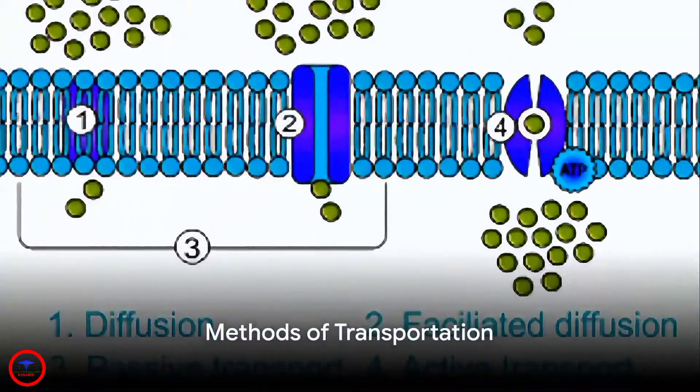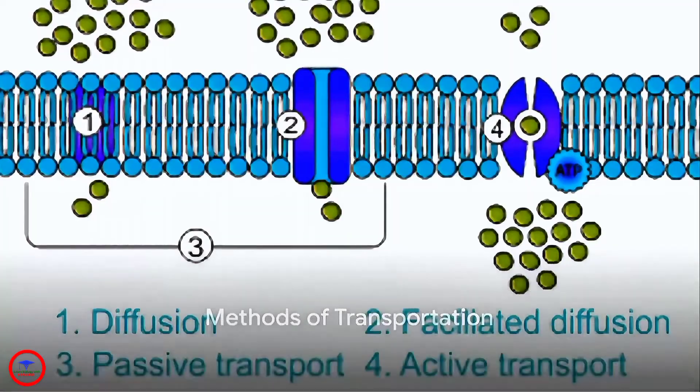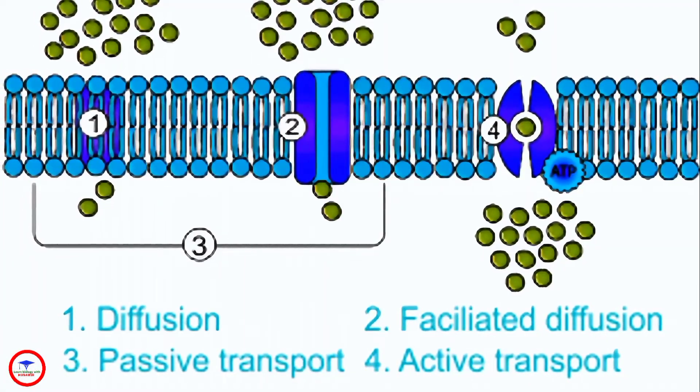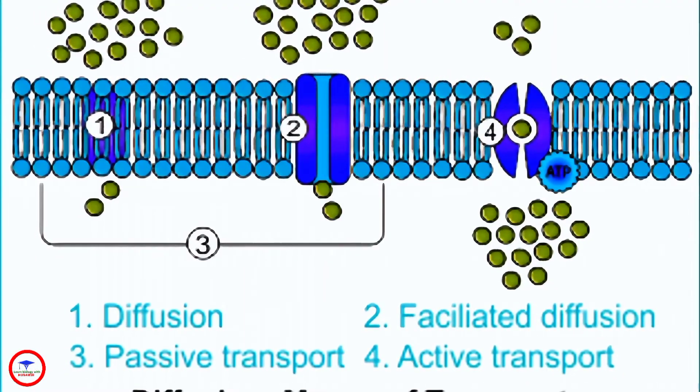Now on to the methods of transportation. Plants primarily use three methods: diffusion, osmosis, and active transport.